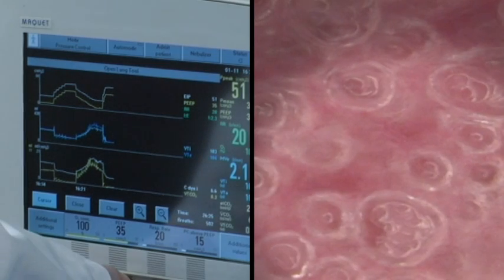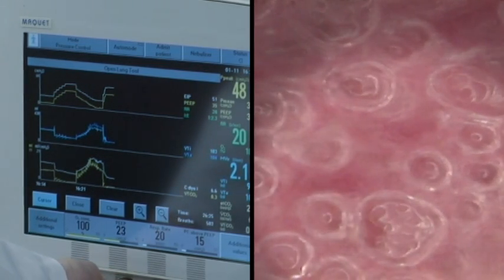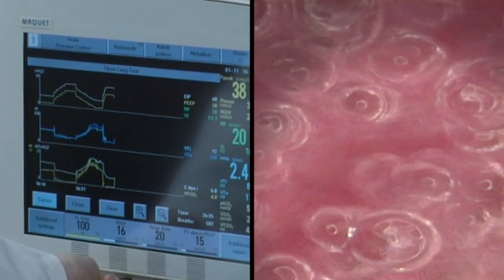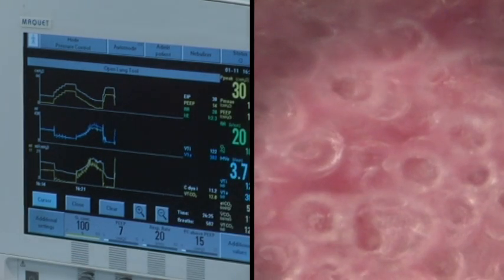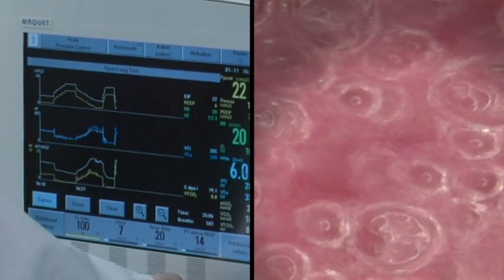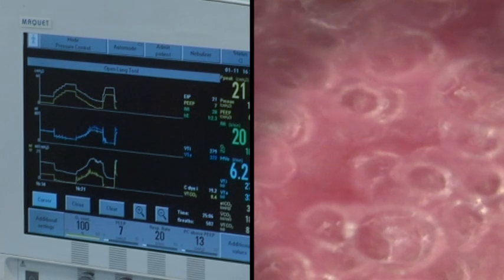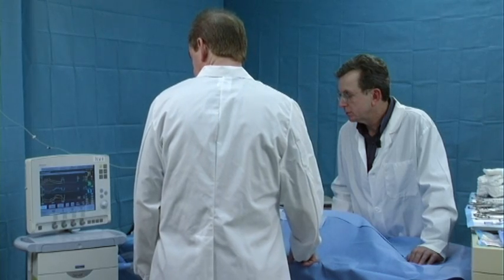Ventilation is maintained at these settings for 1 to 2 minutes. Optimal PEEP is now set at the collapsing point, plus 2 to 3 cm of water. Pressure above PEEP is adjusted to achieve a tidal volume of 6 ml per kilo. A clear improvement in dynamic compliance will signal successful recruitment.